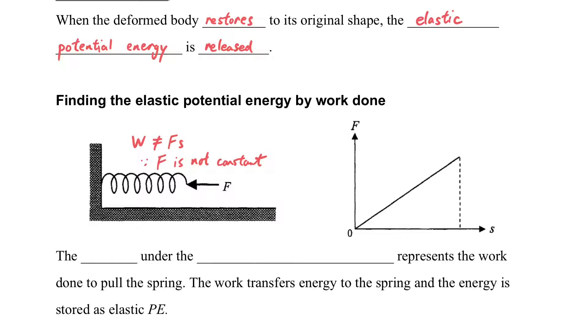When you press a spring, you'll find that it gets harder and harder to press it. That's why the force is not constant. So how do we find the Elastic Potential Energy?